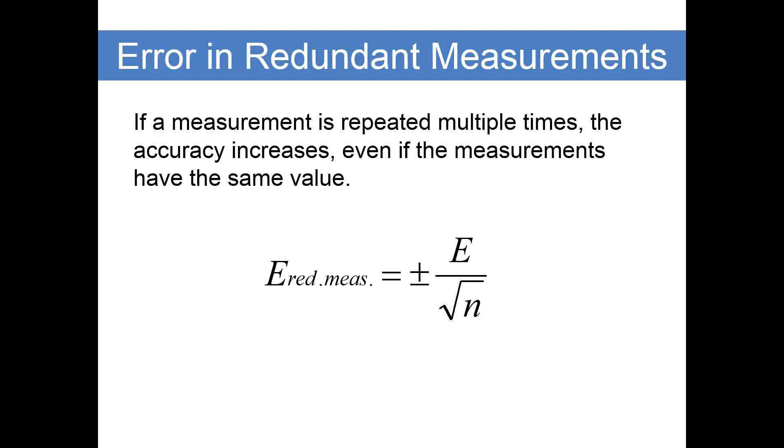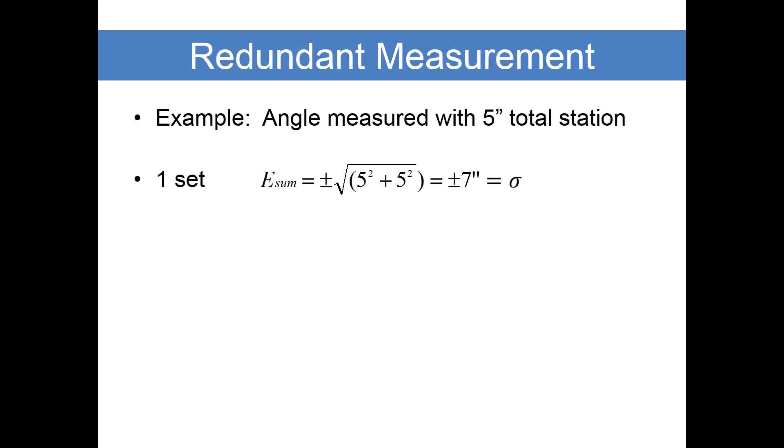This is with a 5 second instrument, so why aren't we getting 5 seconds? We haven't satisfied the criteria for achieving 5 seconds yet, and we do that with redundant measurement. If a measurement is repeated multiple times, the accuracy increases. The formula: the error in the redundant measurement is plus or minus the error itself divided by the square root of the repetitions.